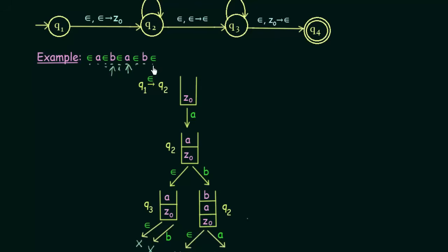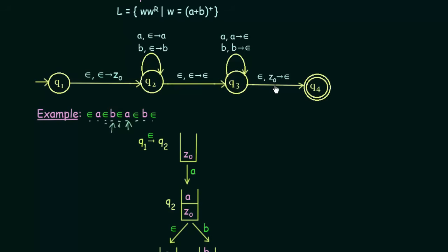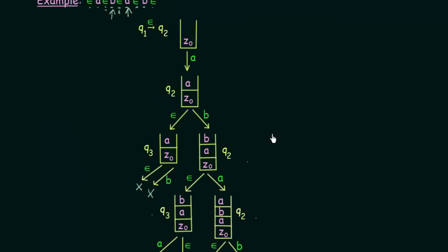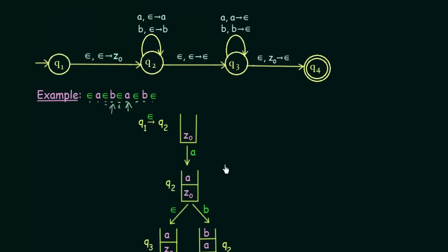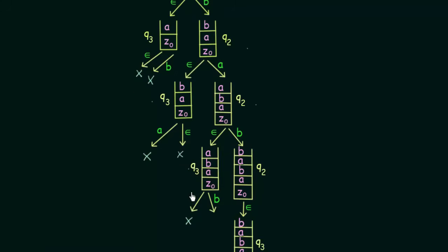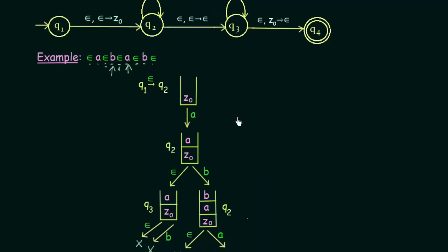In state q3 if we read epsilon, we must check if z0 is on top of the stack — but the top is 'a', not z0, so this path fails. If we read 'b' in state q3, we check if 'b' is the topmost symbol — but it is 'a', not 'b'. So this path also fails. The only option remaining is to go back and read 'b' in state q2 instead of epsilon.